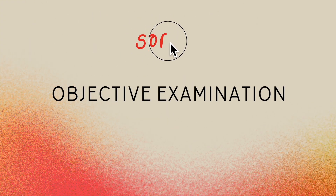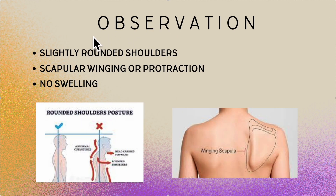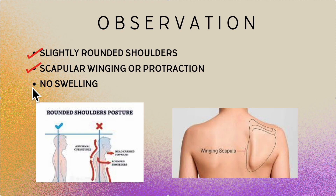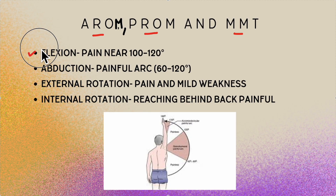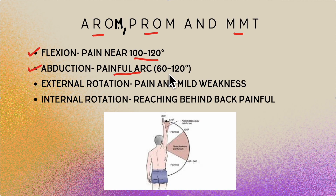Now moving to the objective examination. Starting with observation: the patient had slightly rounded shoulders, scapular winging and protraction, but no swelling around the shoulder. For active range of motion, during flexion, he had pain in the 100 to 120 degree range. During abduction, we can notice the painful arc sign — pain in 60 to 120 degrees of abduction.